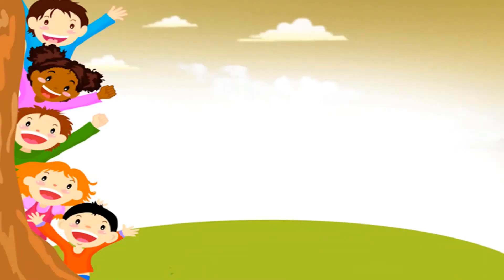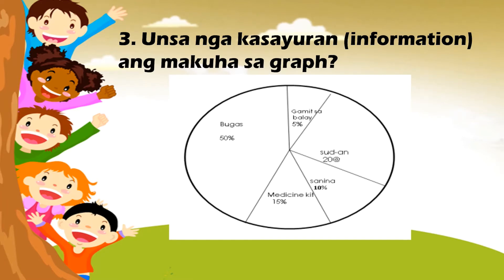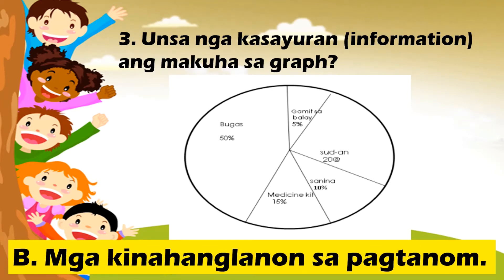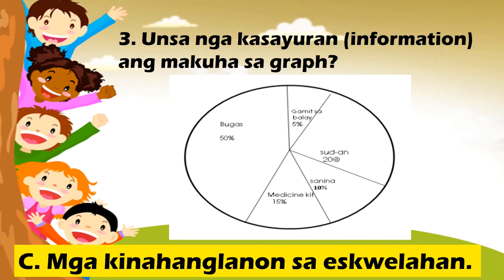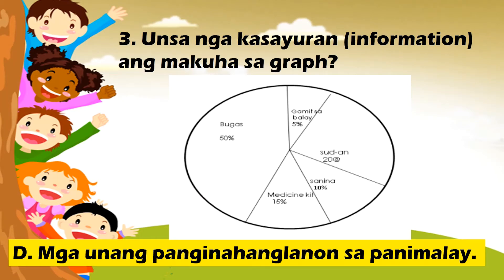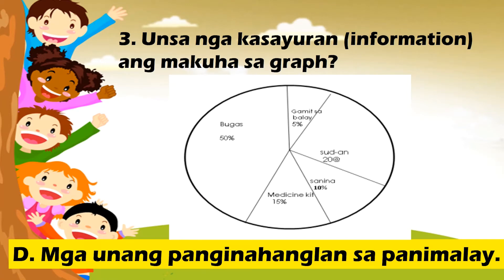Unsa nga kasayuran o information ang makuha sa graph? A. Mga kinahanglan sa pagpangisda. B. Mga kinahanglanon sa pagtanom. C. Mga kinahanglanon sa eskwelahan. D. Mga unang kinahanglanon sa panimalay. Letrang D. Mga unang kinahanglanon sa panimalay.